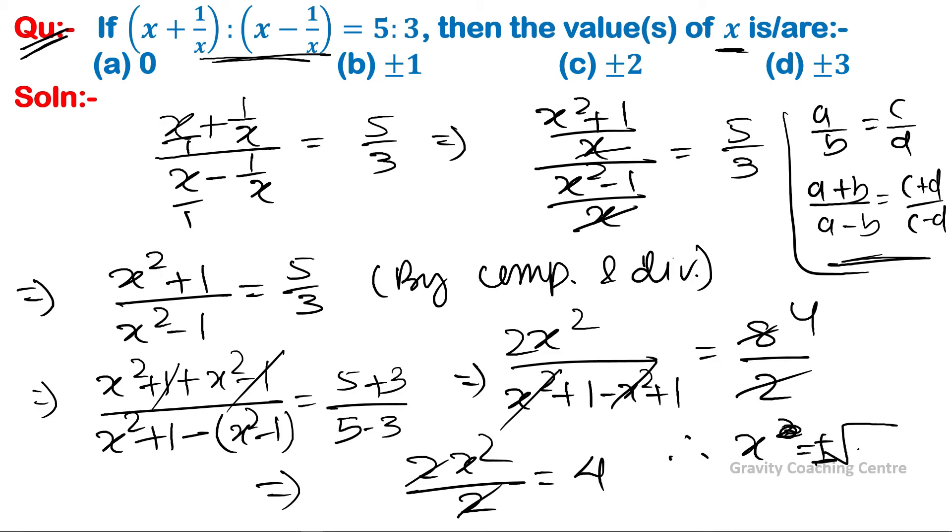plus minus root under 4, so x equals plus minus 2. Answer. So option c is the correct answer.